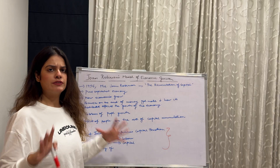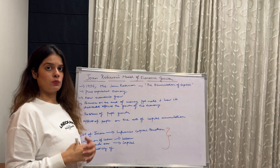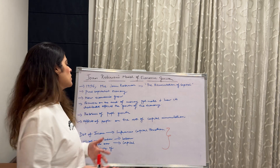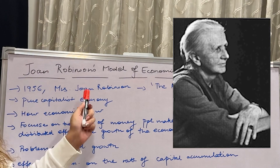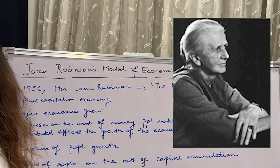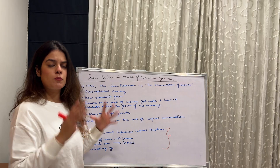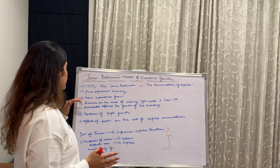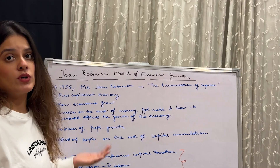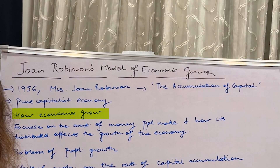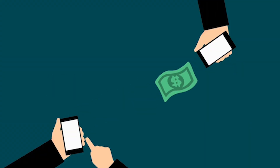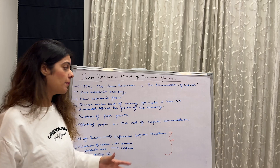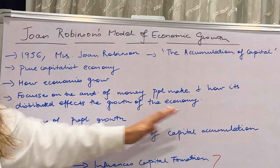Let me quickly introduce this topic and what we are going to study in this video. This model was given in the year 1956 by Mrs. Joan Robinson in her book, 'The Accumulation of Capital,' where she spoke about a pure capitalist economy. What she studied is how economies grow, how much money people make, how it is distributed, and how that distribution affects the capital of the economy and the growth of the economy.